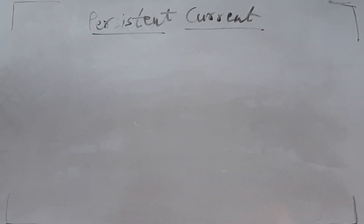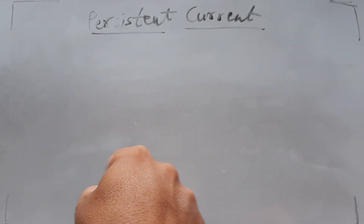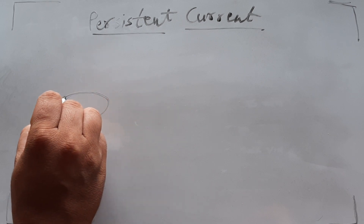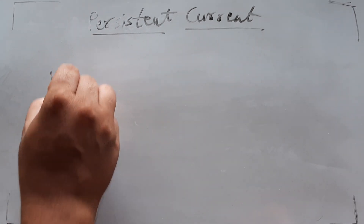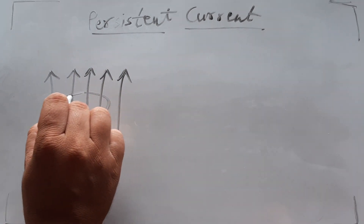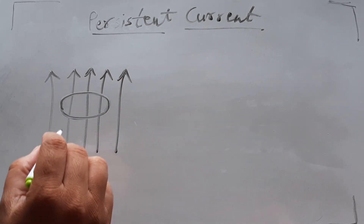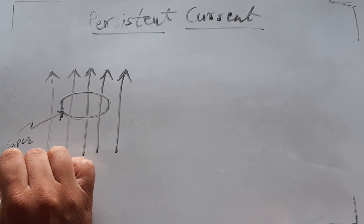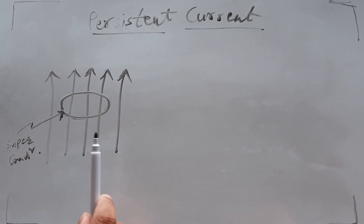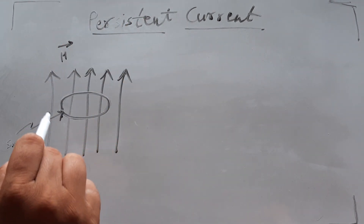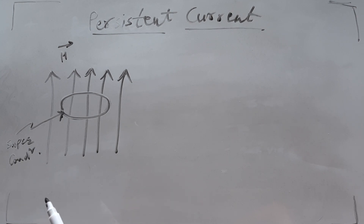So, persistent current. Suppose we have a superconducting material in the form of a ring — a circular ring — which is placed in a magnetic field. This is the ring, and these are the magnetic field lines. This ring is a superconducting material. The external magnetic field we always denote as H-bar.